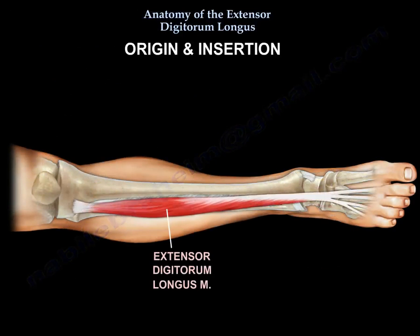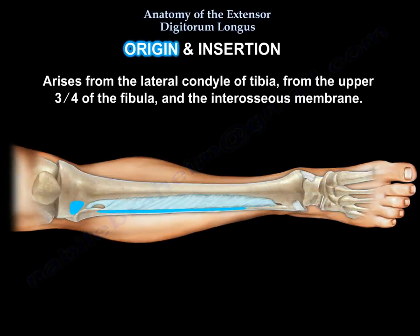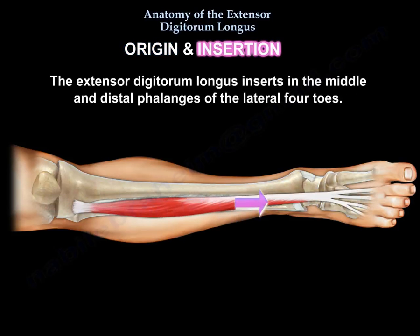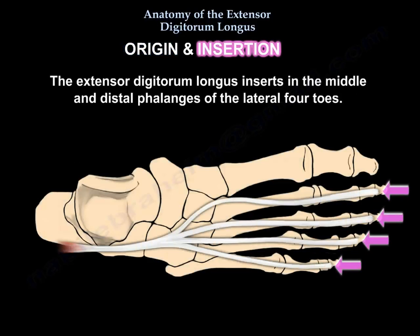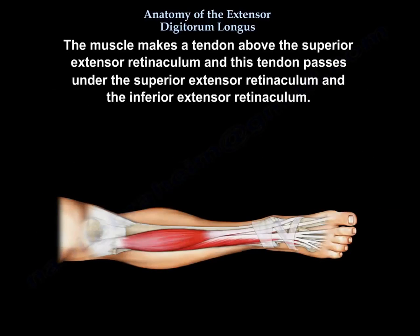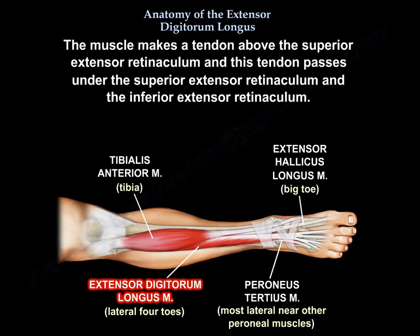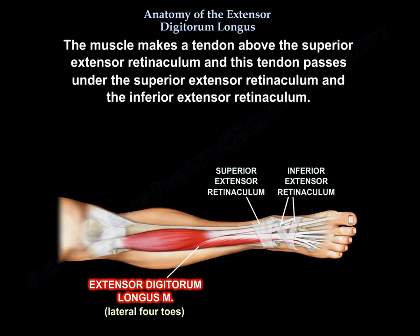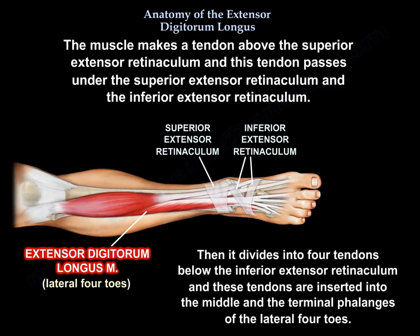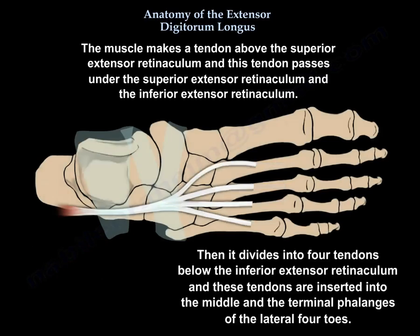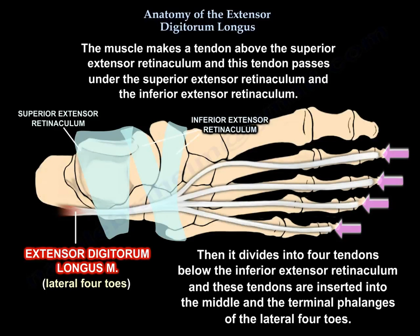The extensor digitorum longus arises from the lateral tibial condyle and from the upper three-fourths of the anterior fibula. It inserts into the middle and distal phalanges of the lateral four toes. The muscle forms a tendon above the superior extensor retinaculum, passes under both the superior and inferior extensor retinacula, then divides into four tendons below the inferior extensor retinaculum, which insert into the middle and terminal phalanges of the lateral four toes.